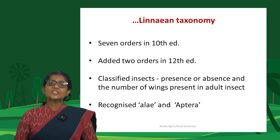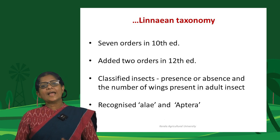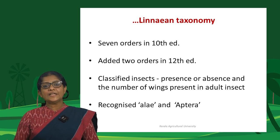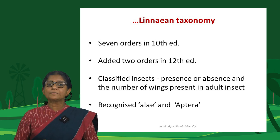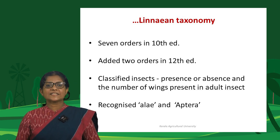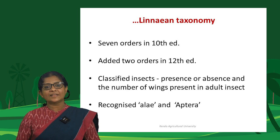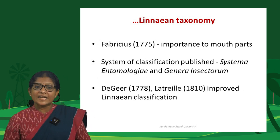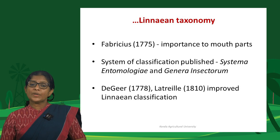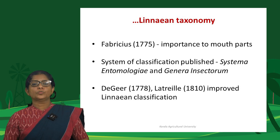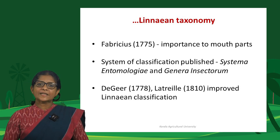In his 12th edition of Systema Naturae, Linnaeus added 2 more insect orders. He classified insects based on the presence or absence of wings and the number of wings in adult insects, recognizing Alata (winged insects) and Aptera (wingless insects). His student Fabricius improved the classification by giving importance to mouthparts, traveled extensively, described many insect species, and published his system in two books: Systema Entomologiae and Genera Insectorum.